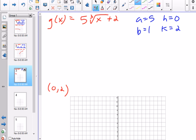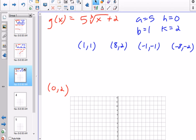So since I don't see any fractions here, I'm going to use the parent points 1,1 and 8,2 because the cube root of 8 is 2. But then I'm also going to use negative 1, negative 1, and then negative 8, negative 2. Try to keep it as small as possible so I can fit it in my window.